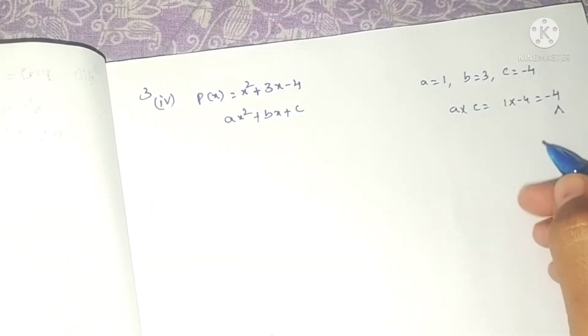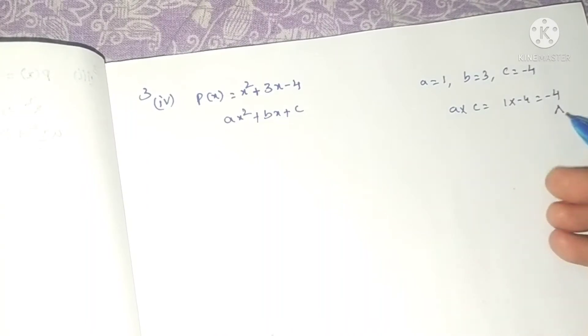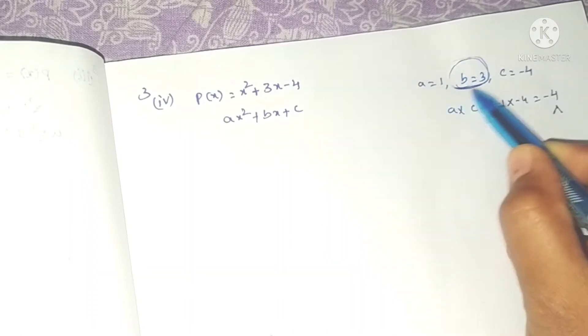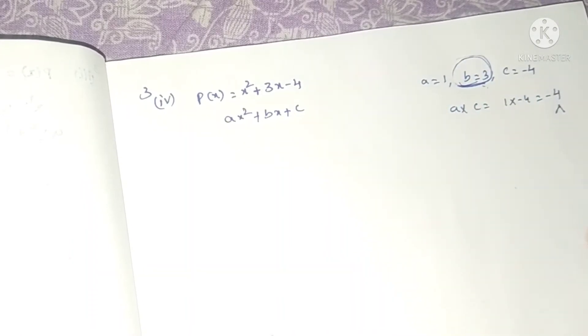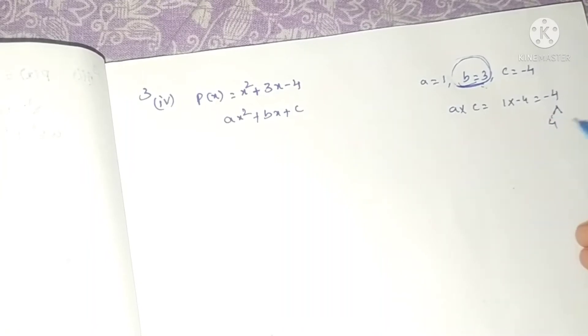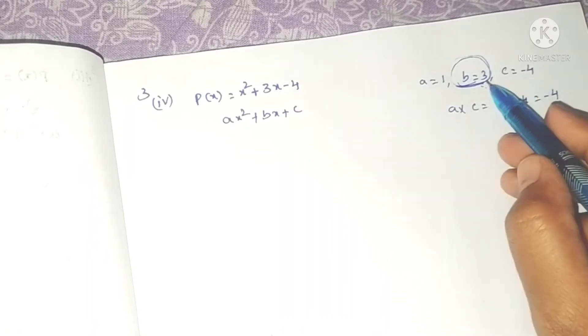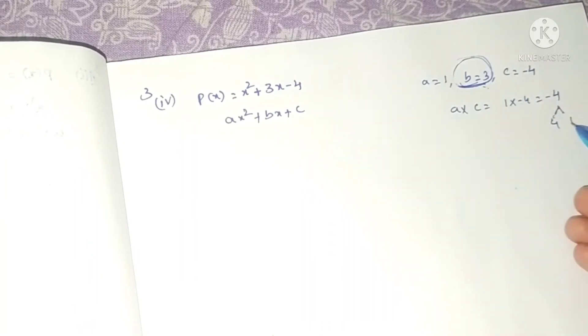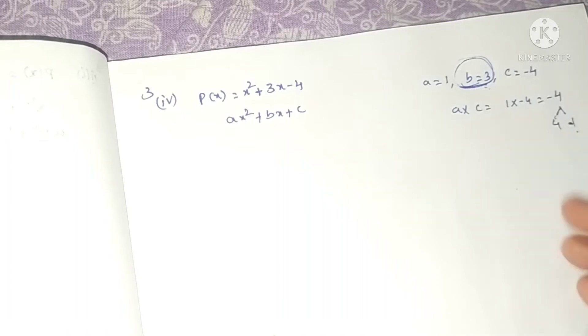First we need to find a into c, that's 1 into minus 4, equals minus 4. So we need the factors of minus 4, which numbers when multiplied give minus 4, and when added or subtracted give plus 3.